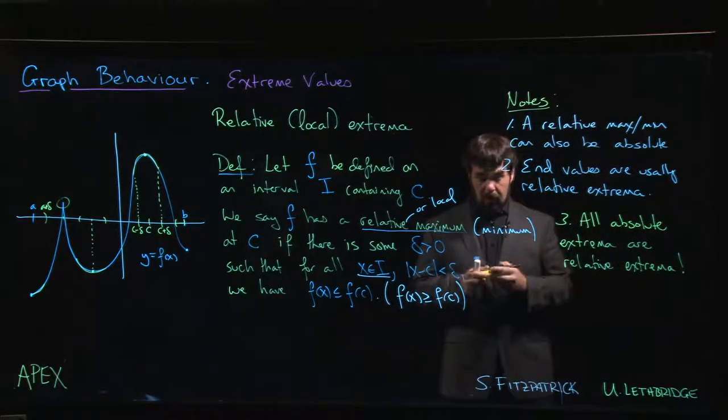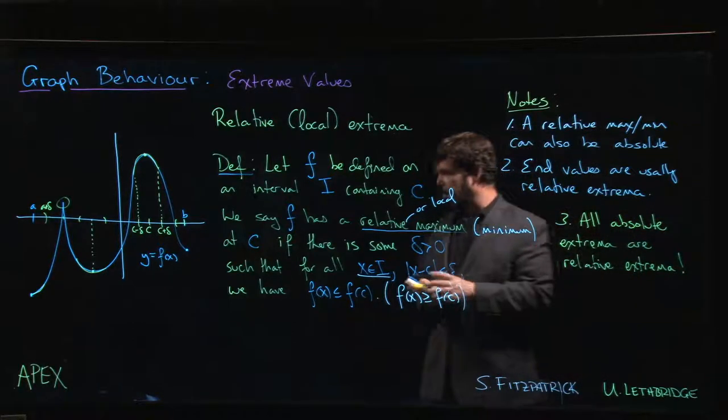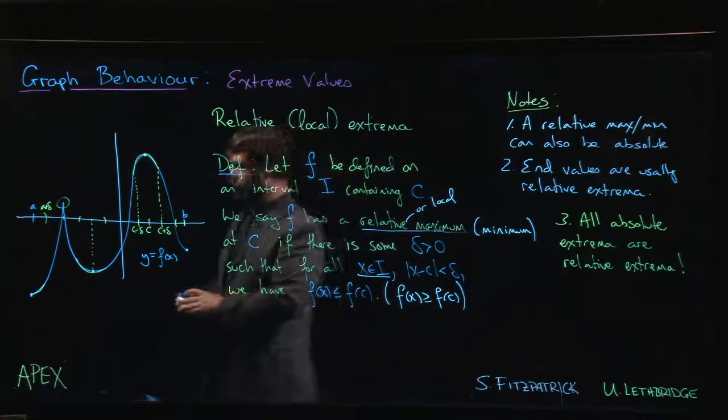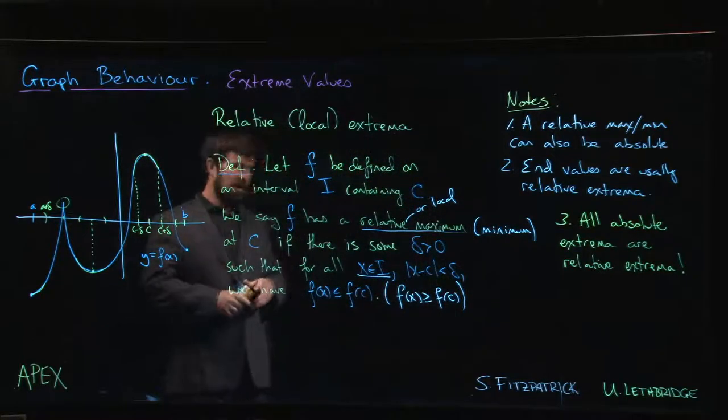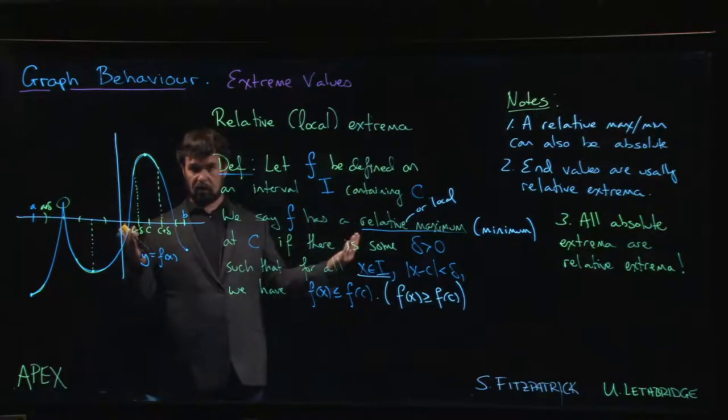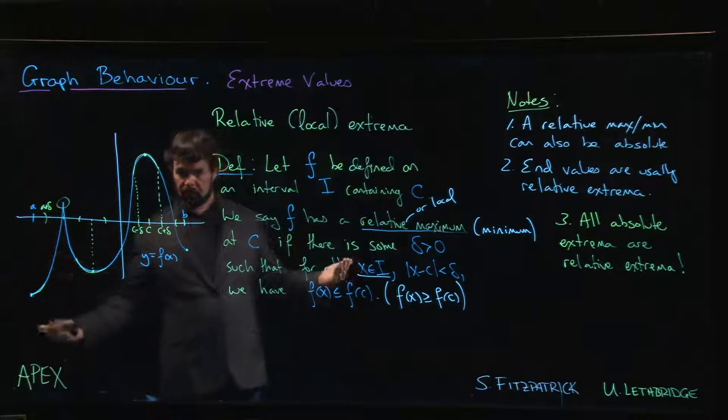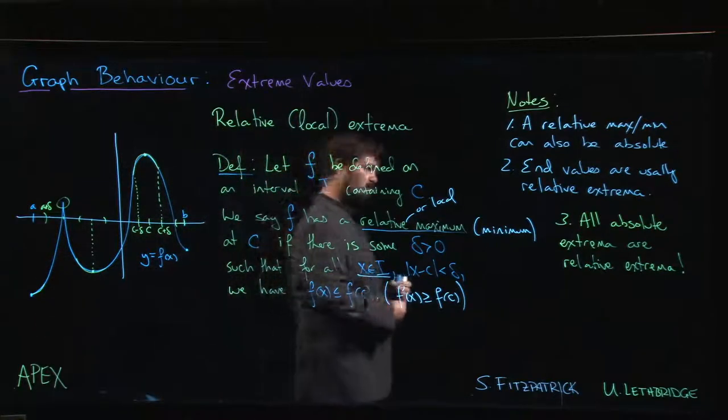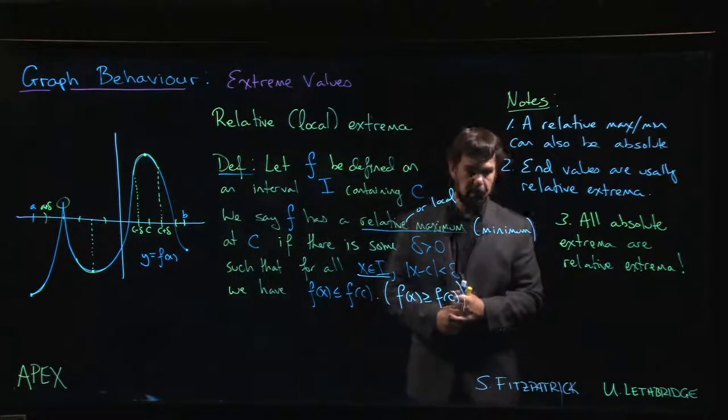So now we have the beginnings of a strategy here for finding these absolute max/min values. If we know how to find all the relative extreme values, then all we have to do is compare them. The largest of the relative maxima is going to be the absolute maximum, and the smallest of the relative minima is going to be the absolute minimum.